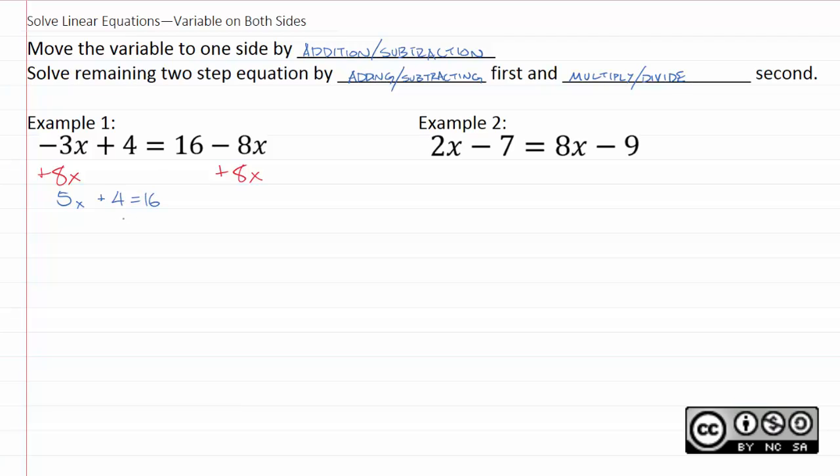Same idea here, I'll just subtract 4 from both sides. Now this should be a little more familiar. This should look like problems that you have done in previous units. 5x now equals 12, and to solve I divide by 5, and we're all set because x equals 12 fifths.